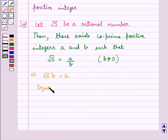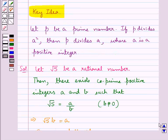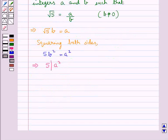Now, squaring both sides, we get 5B squared is equal to A squared. This means that 5 divides A squared, and since 5 is a prime number, according to the theorem stated in the key idea — if the prime number P divides A squared then P divides A — this means that if 5 divides A squared, then 5 also divides A.